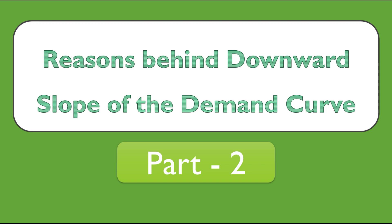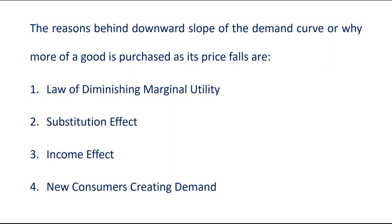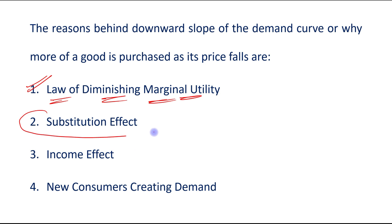Reasons behind the downward slope of the demand curve, Part 2. In the last video we discussed the first reason, which is the law of diminishing marginal utility. In this video we will discuss the second reason, which is the substitution effect.